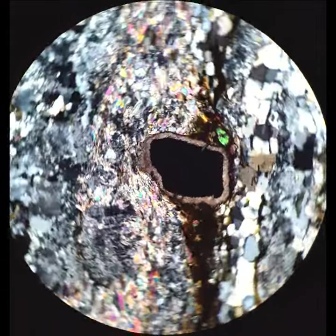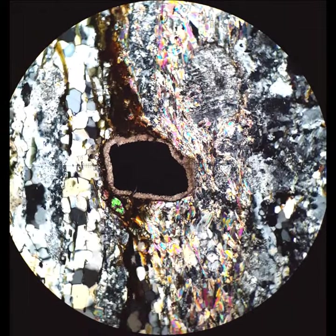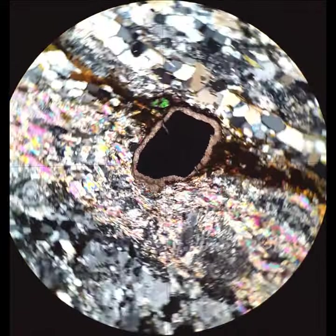It's kind of hard to know exactly what it is, but high relief, brownish color in plain polarized light, high interference colors, and if you go and look at it with an electron microscope, it's titanite.